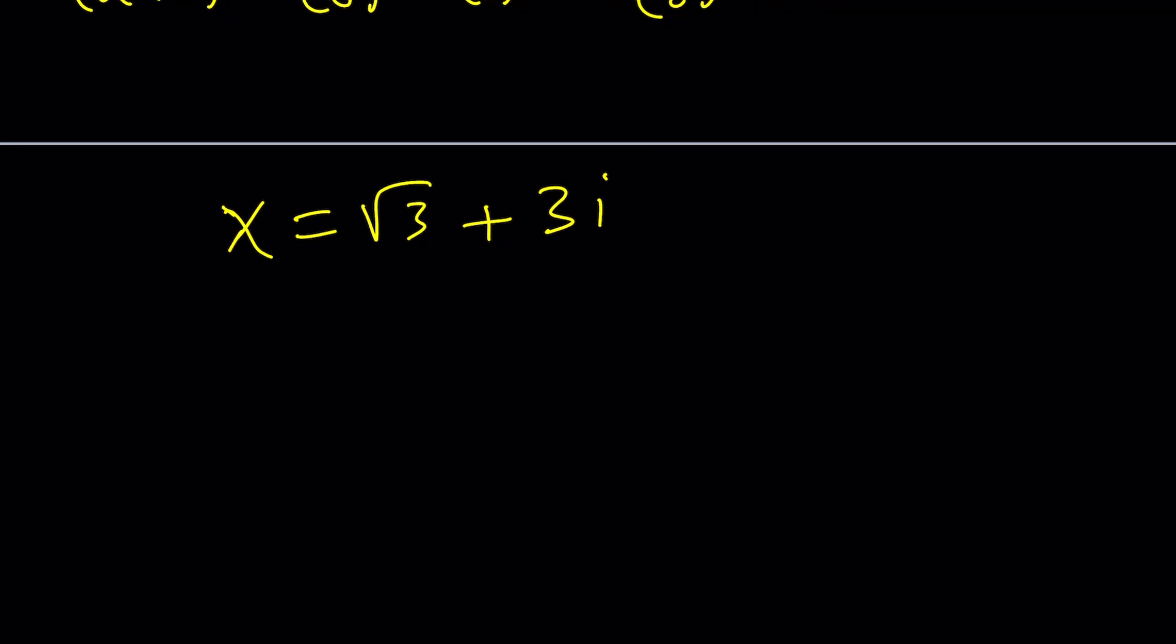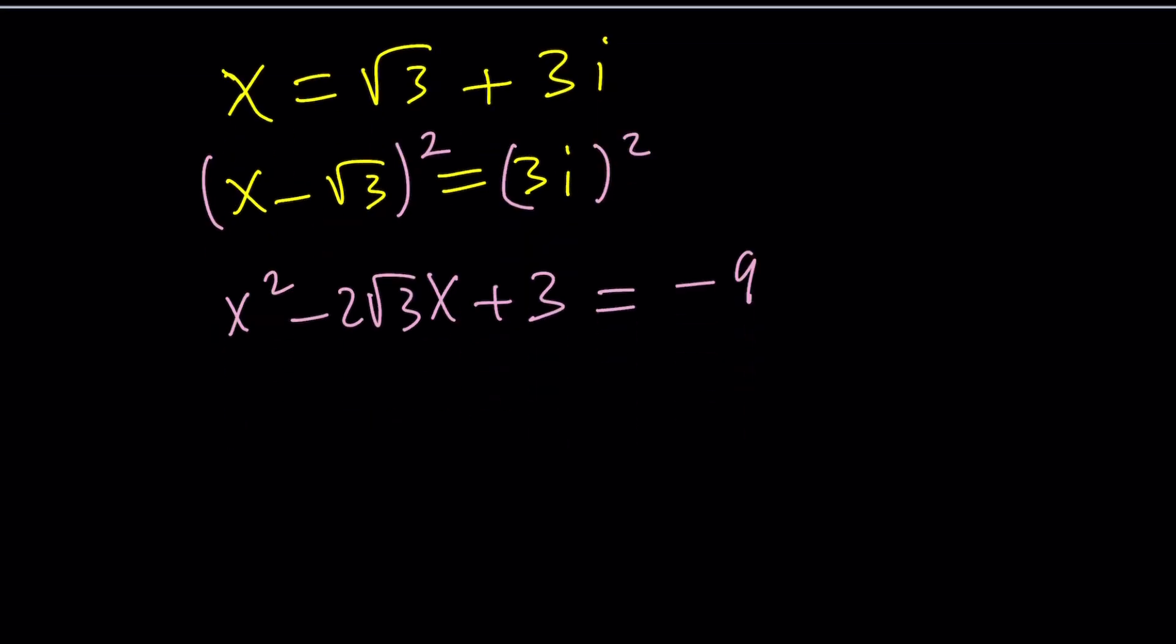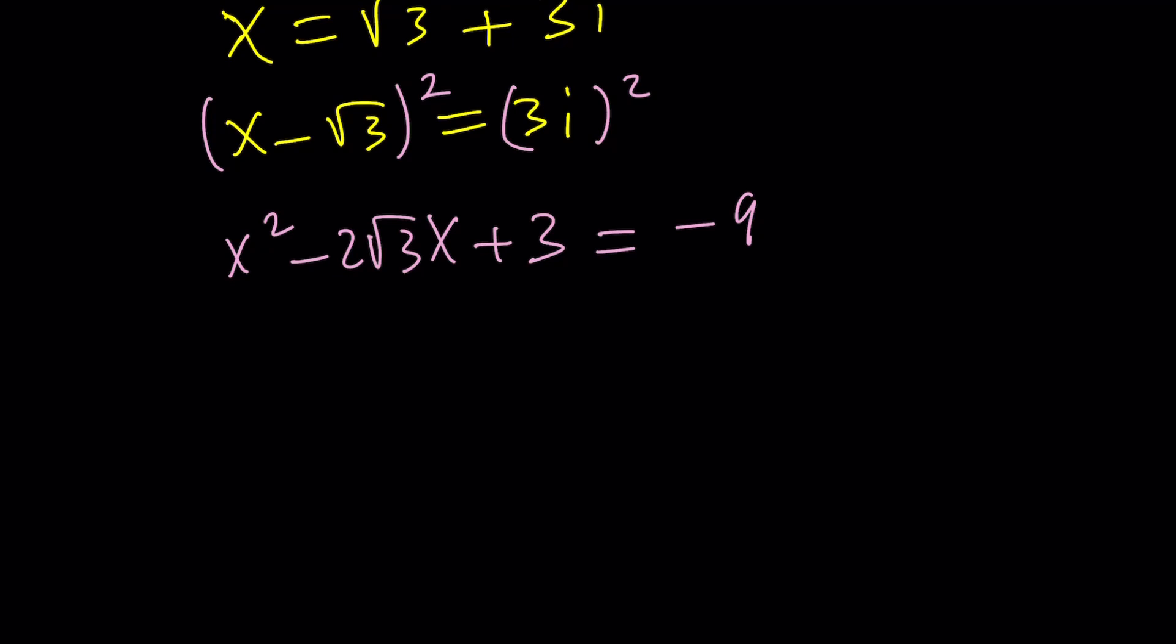One way to do it is subtract square root of 3 from both sides, then square both sides. That's not going to get rid of all the radicals, but it's going to give us something helpful. Squaring both sides gives us x squared minus 2 root 3x plus 3 equals 9i squared, which is negative 9. I didn't get rid of all the radicals, but I'm pretty close. This is the only one I need to get rid of.